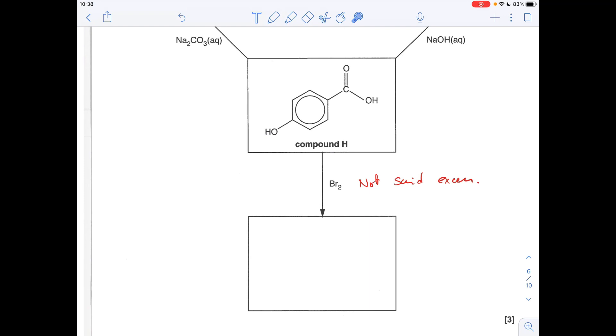The next reaction, compound H with Br2. So phenols react with bromine. Now normally there'll be an excess of bromine. You can get that 2, 4, 6 tri-bromo substituted product. It hasn't said excess. So I'm just going to go for a mono substituted product.